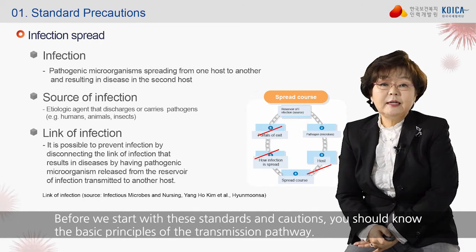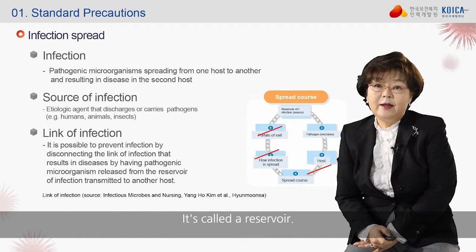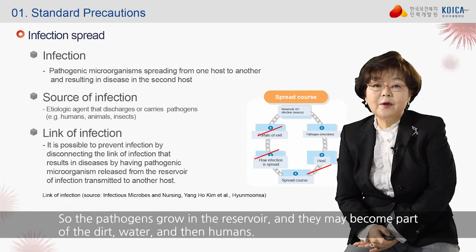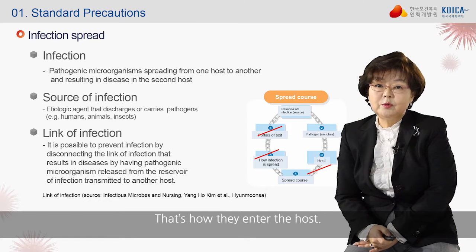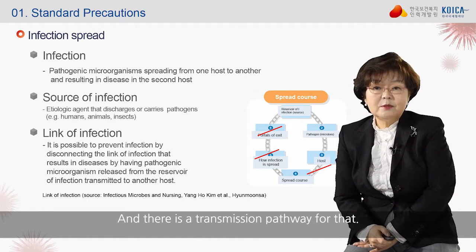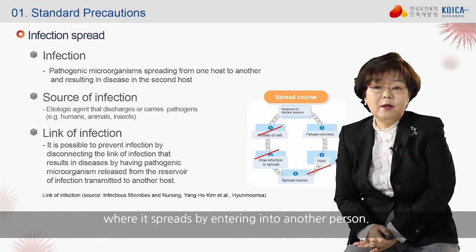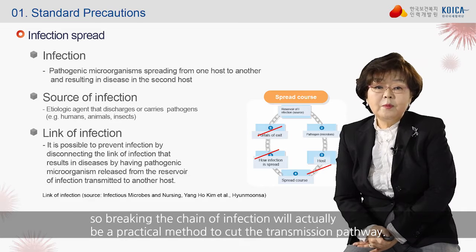Before we start with these standards and cautions, you should know the basic principles of the transmission pathway. Regarding pathogens, they usually have a place they like, called a reservoir. Pathogens grow in the reservoir and may become part of the dirt, water, and then humans. An influenza virus present in one person comes out as a cough and pollutes the outside environment, then spreads by entering another person. If you wear a mask or keep a distance, the transmission route will be cut off.